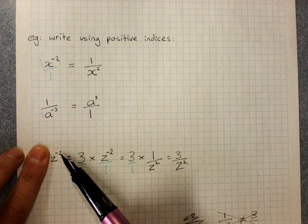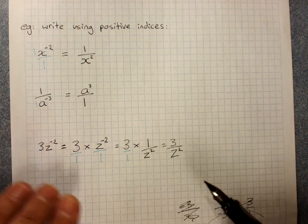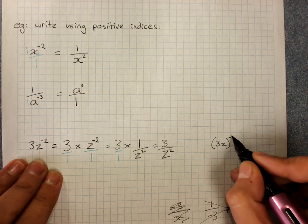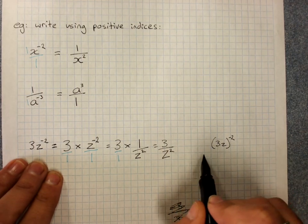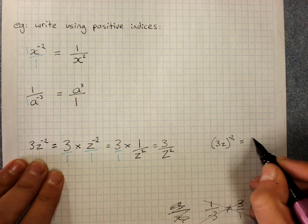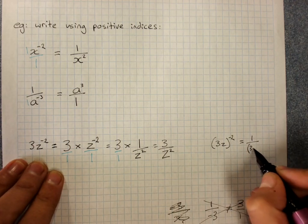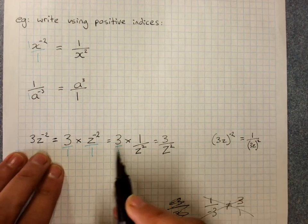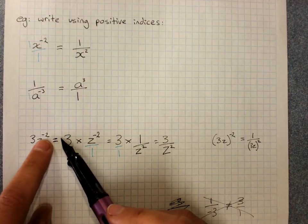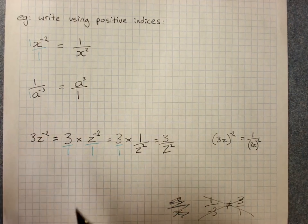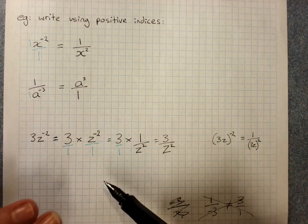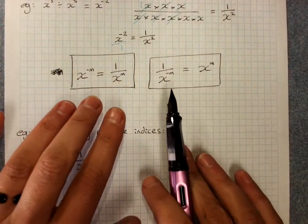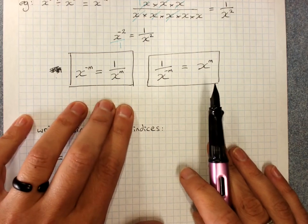The term with a negative power. If I had written that as 3z to the power negative 2, then sure, 1 over the thing with the positive index. But it's only the term that has the negative power that gets to go changing to a positive reciprocal. Please be very, very careful. These are your rules. This will need extra study.